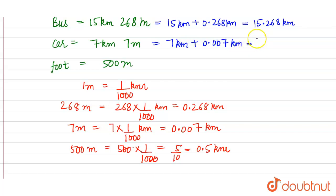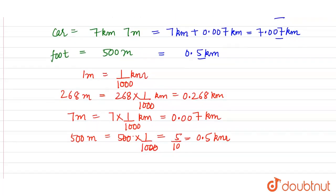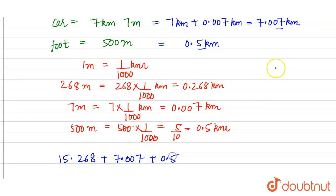7.000 + 0.007 = 7.007 kilometers. And 500 meters = 0.5 kilometers. Now we add all three terms to find the total distance from home to school: 15.268 km + 7.007 km + 0.5 km.